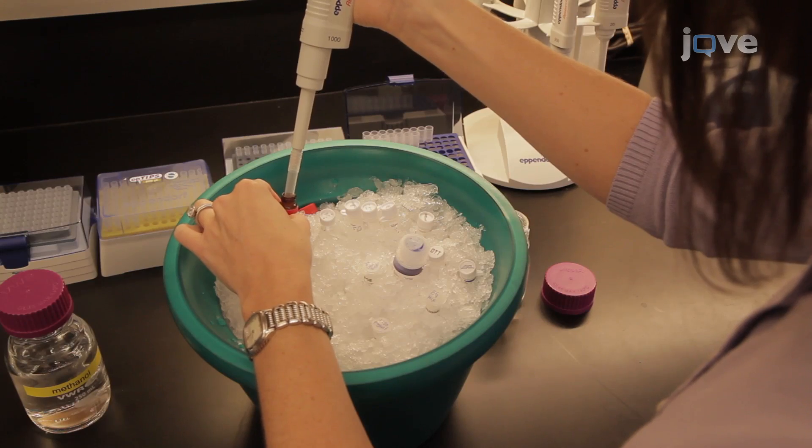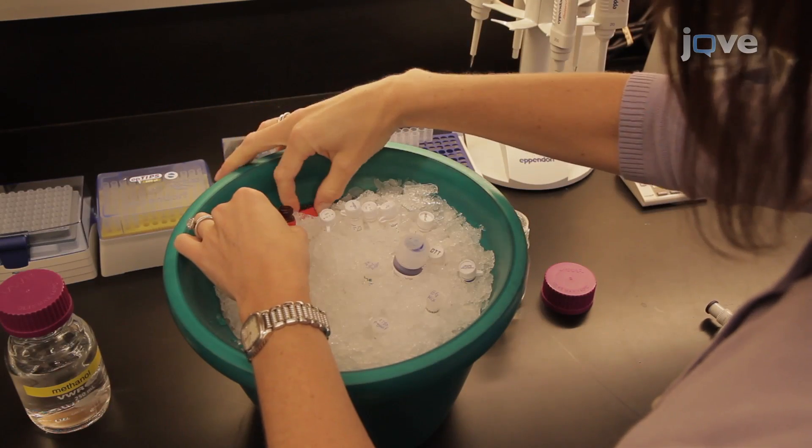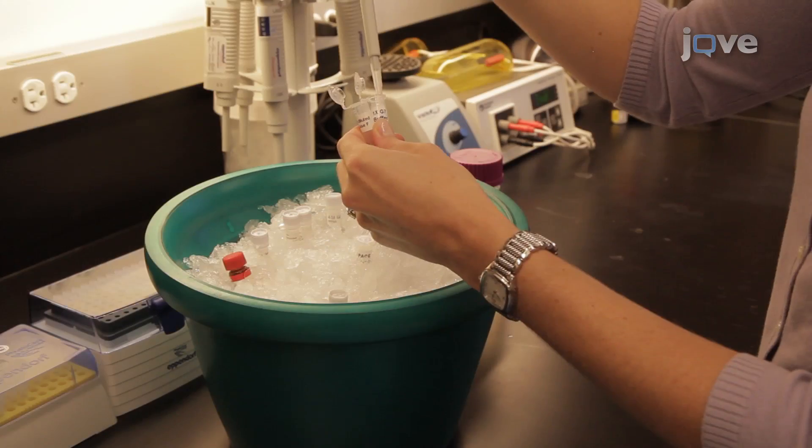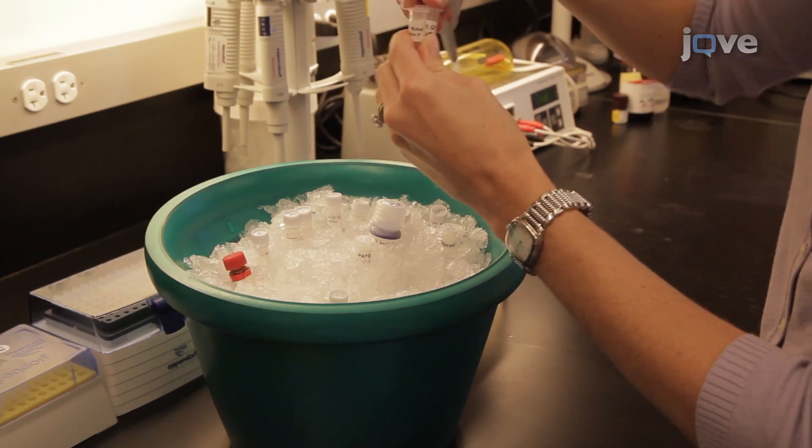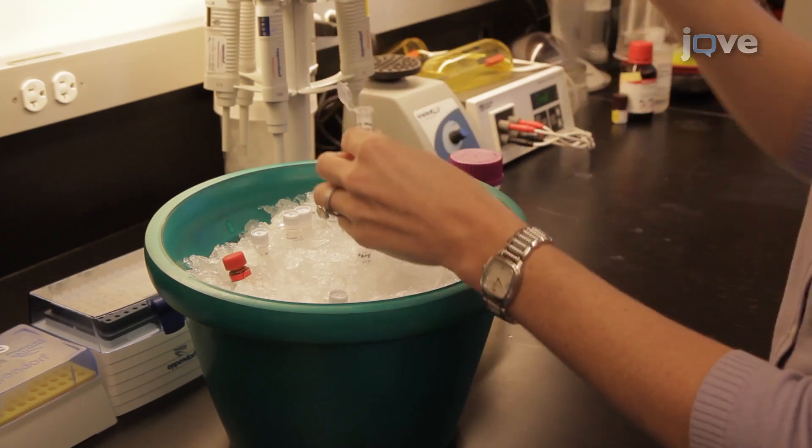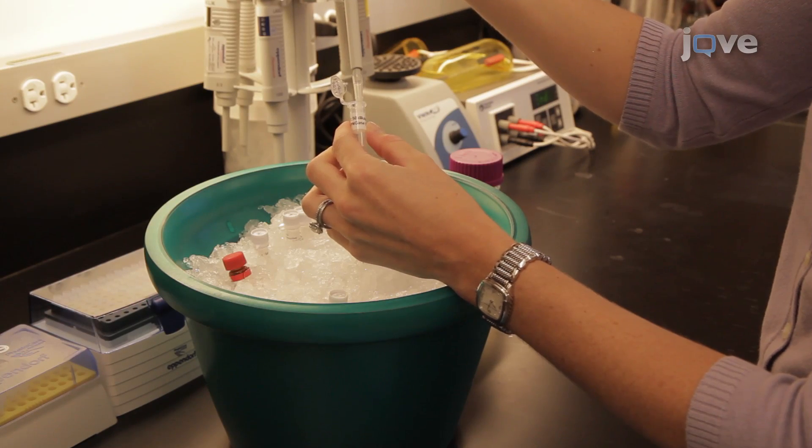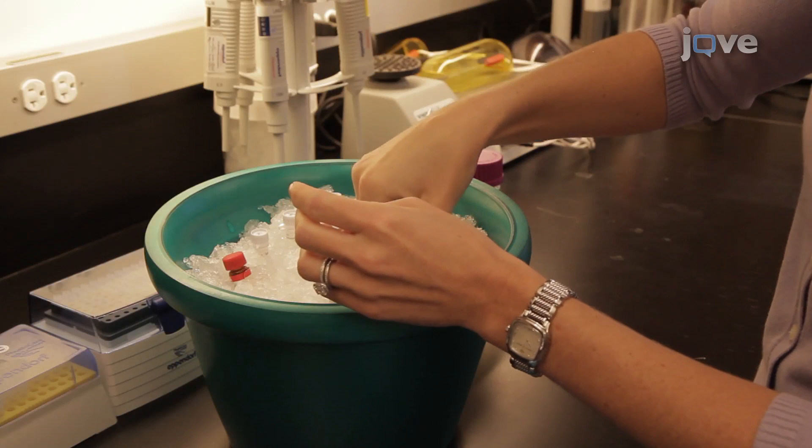Dissolve the contents of the HCG beta vial in 600 microliters of distilled water and keep on ice. After preparing 1 milliliter of 1X G7 buffer by diluting the 10X stock in distilled water, use 25 microliters to dilute 0.5 microliters of PNGase F.